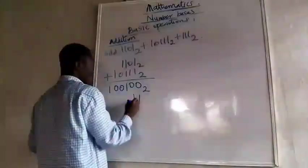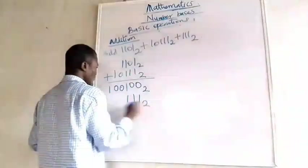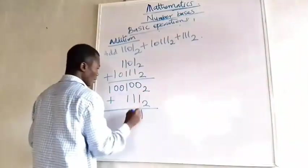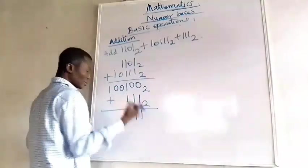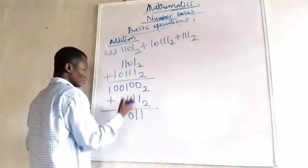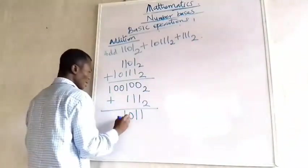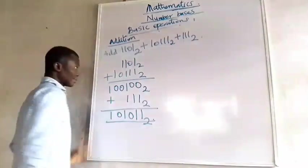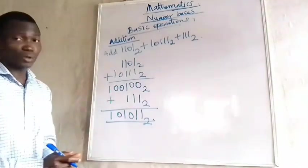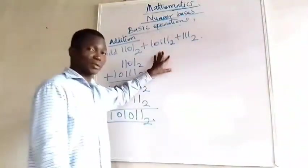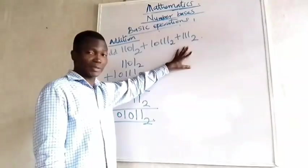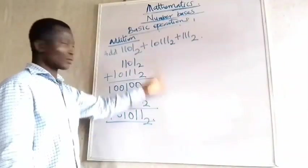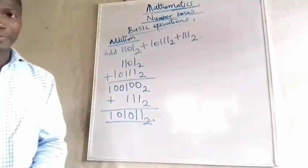Now let's add this result to the third number, 111 base 2. 1 plus 1 gives 2, that is 10 under base 2, carry 1. Adding through we get our final answer. If you want to confirm, compare each of the original numbers and the result to base 10, add everything up, and compare the results — you will see they match.